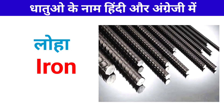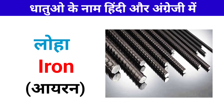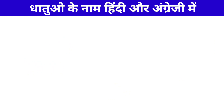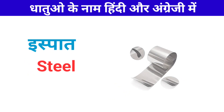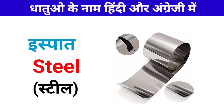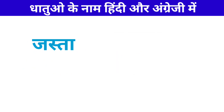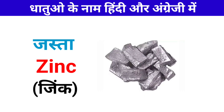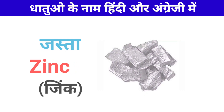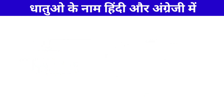Loha — Loha ko English me Iron kaha jata hai: Iron. Ispat — Ispat ko English me Steel kaha jata hai: Steel. Jehastha — Jehastha ko English me Zinc kaha jata hai: Zinc.